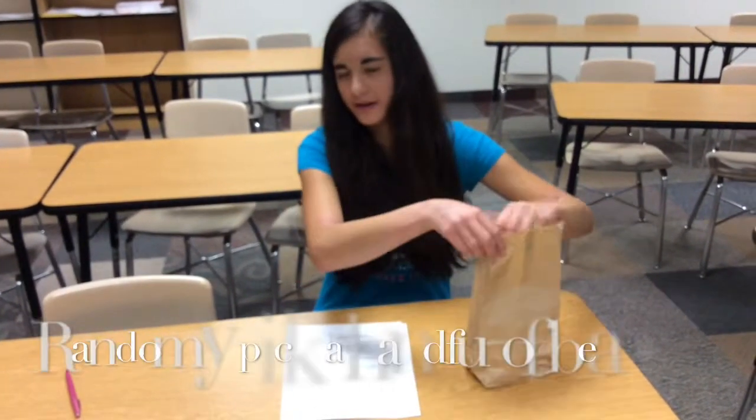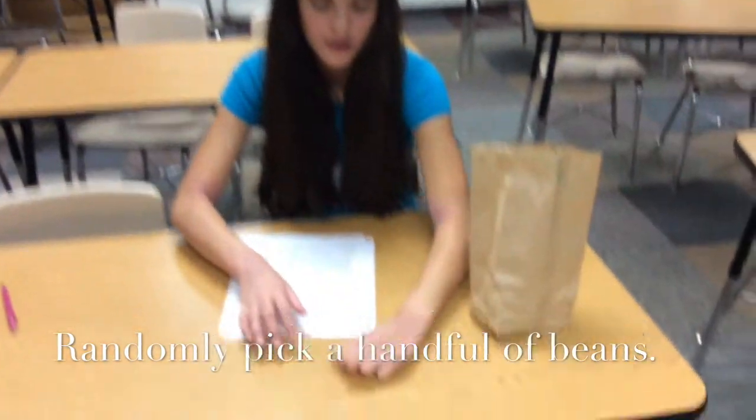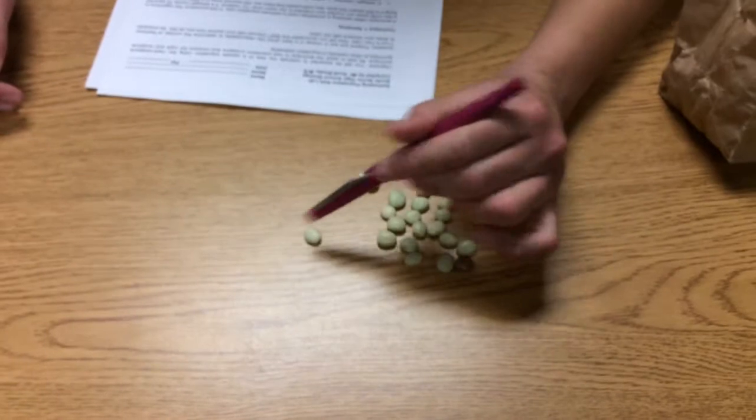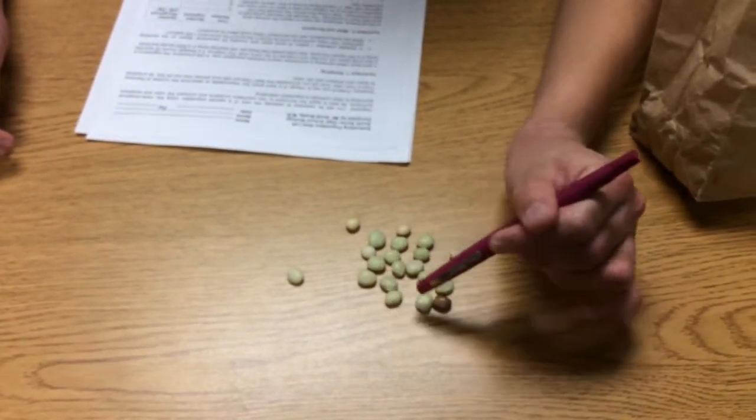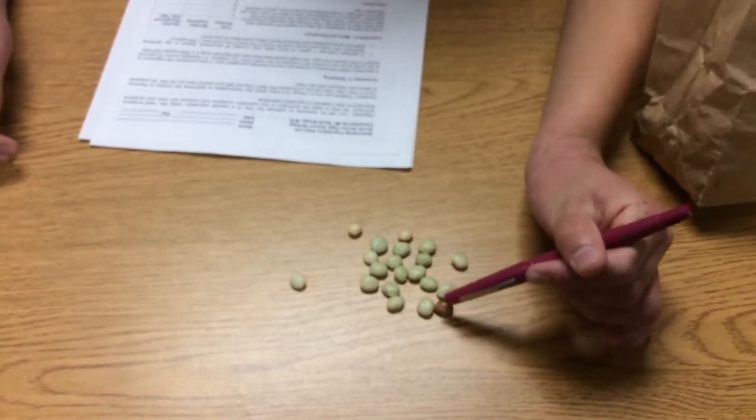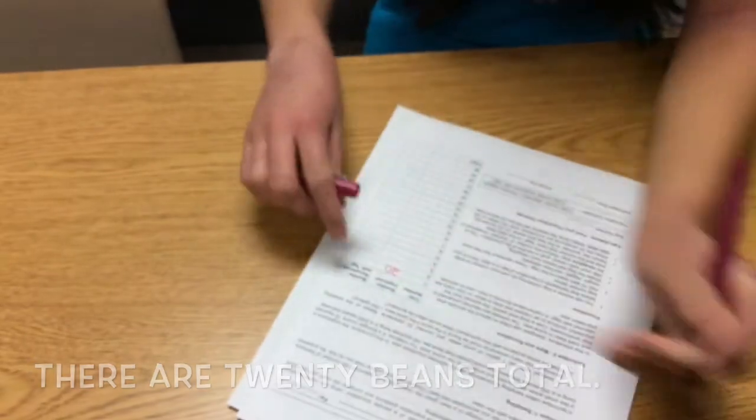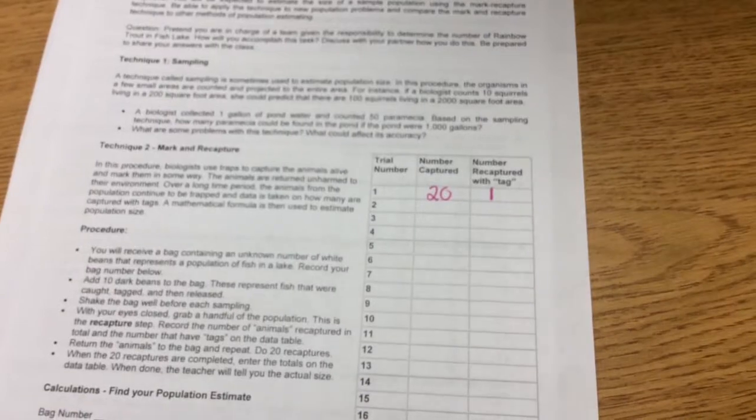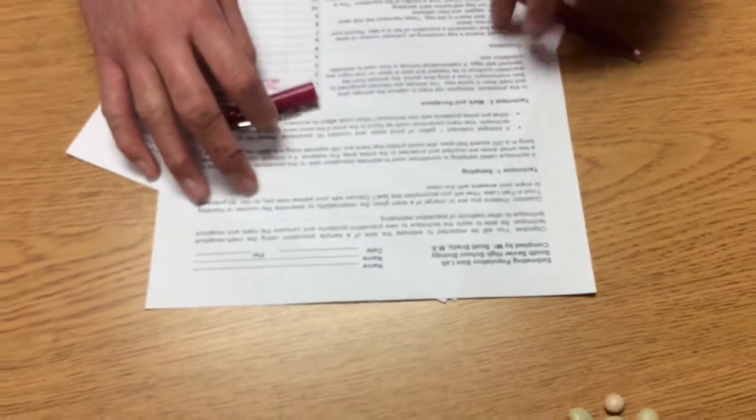So what you'll do for this one is shake up the bag and randomly pick out a handful. Don't look at it as you're pulling it out, just grab a handful and pull it out. And you'll just count how many is in there. In this one there was 20 total. So the number captured will be 20 and the number recaptured with a tag will be 1. Make sure you include the brown bean and the white bean numbers in the number captured.